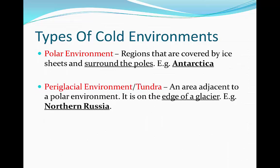A periglacial environment, otherwise known as the tundra, is an area adjacent to a polar environment. It's on the physical edge of the glacier. For example, northern Russia.